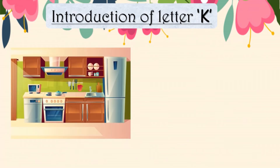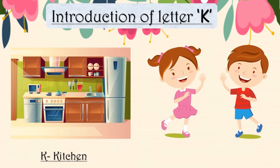Next, children, do you know which picture is this? Yes, this is the picture of a kitchen — K for Kitchen — where your mother cooks delicious food. K for Kitchen. K says K — K for Kids. These two kids are saying hello to you. K for Kids.